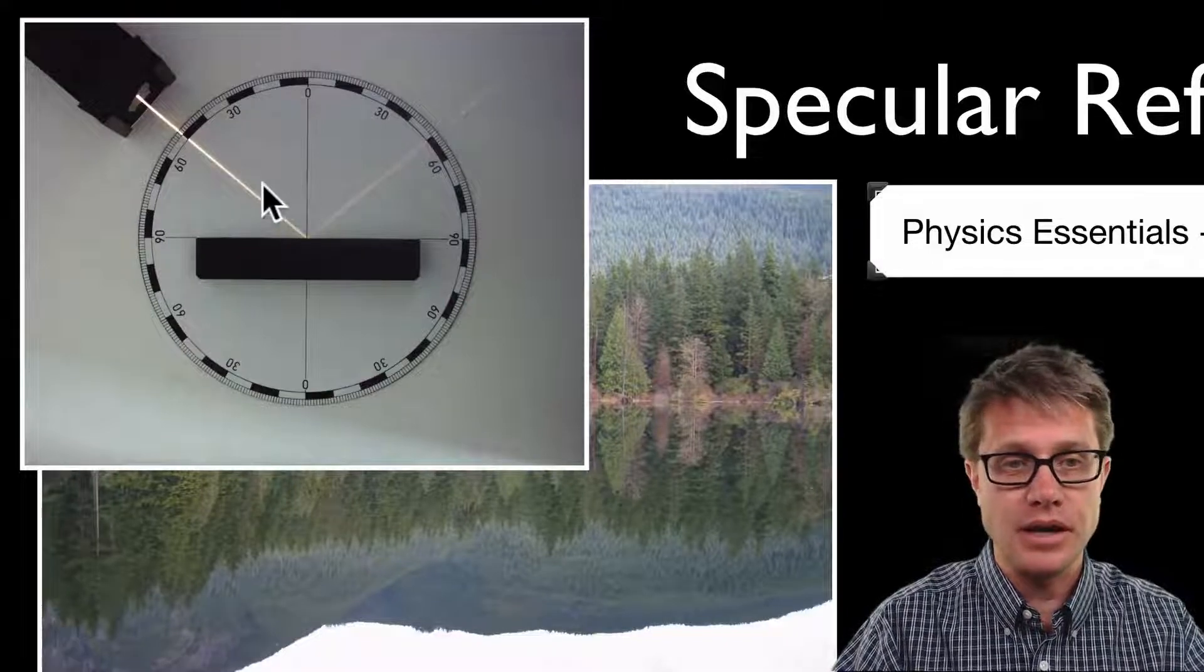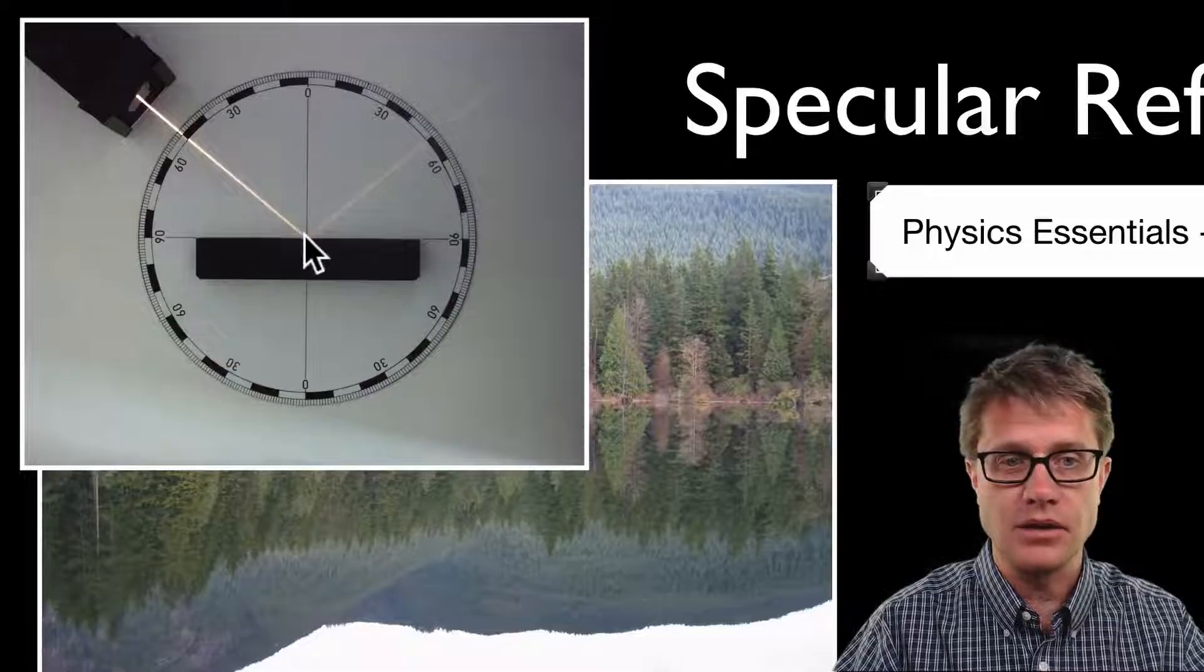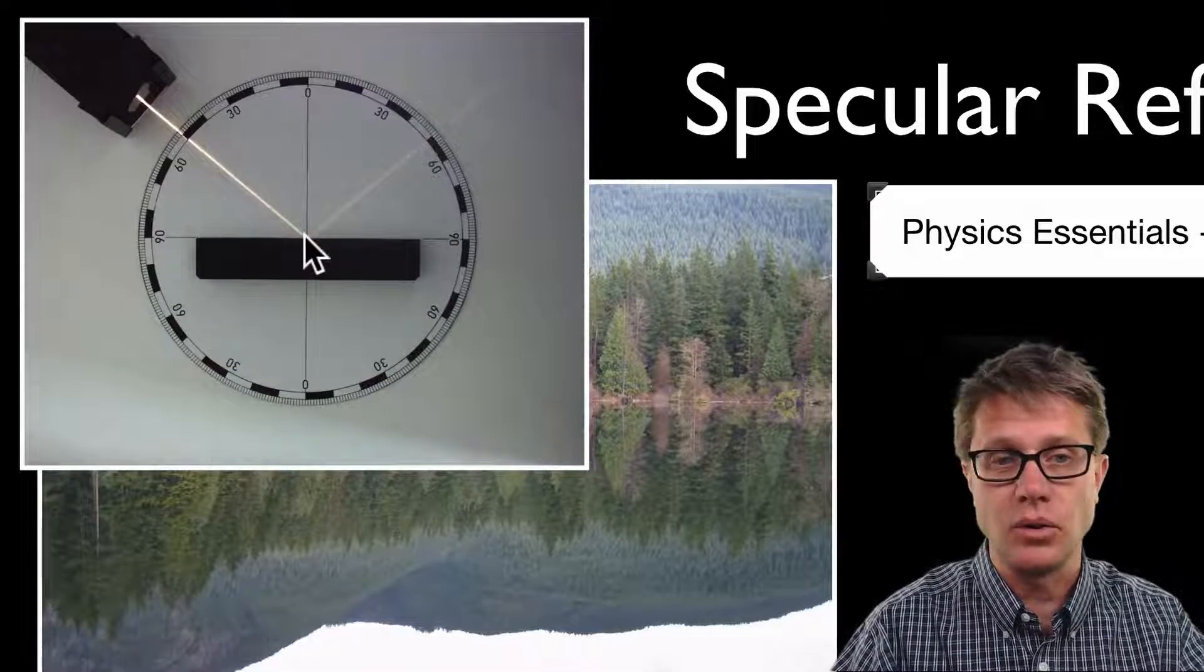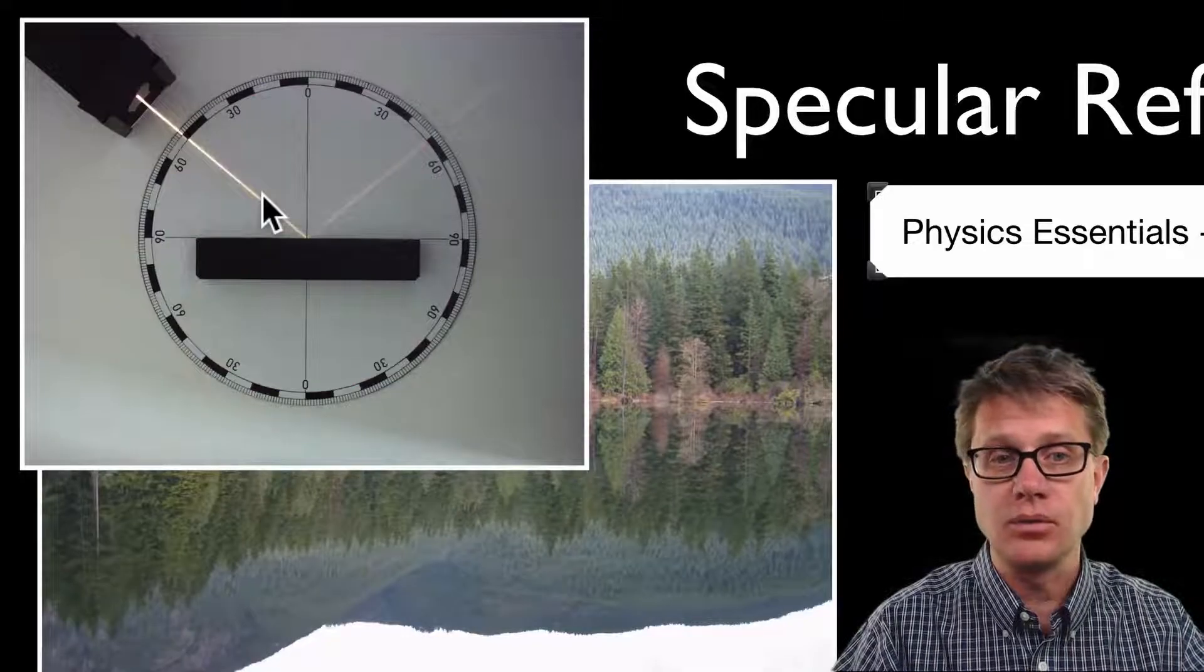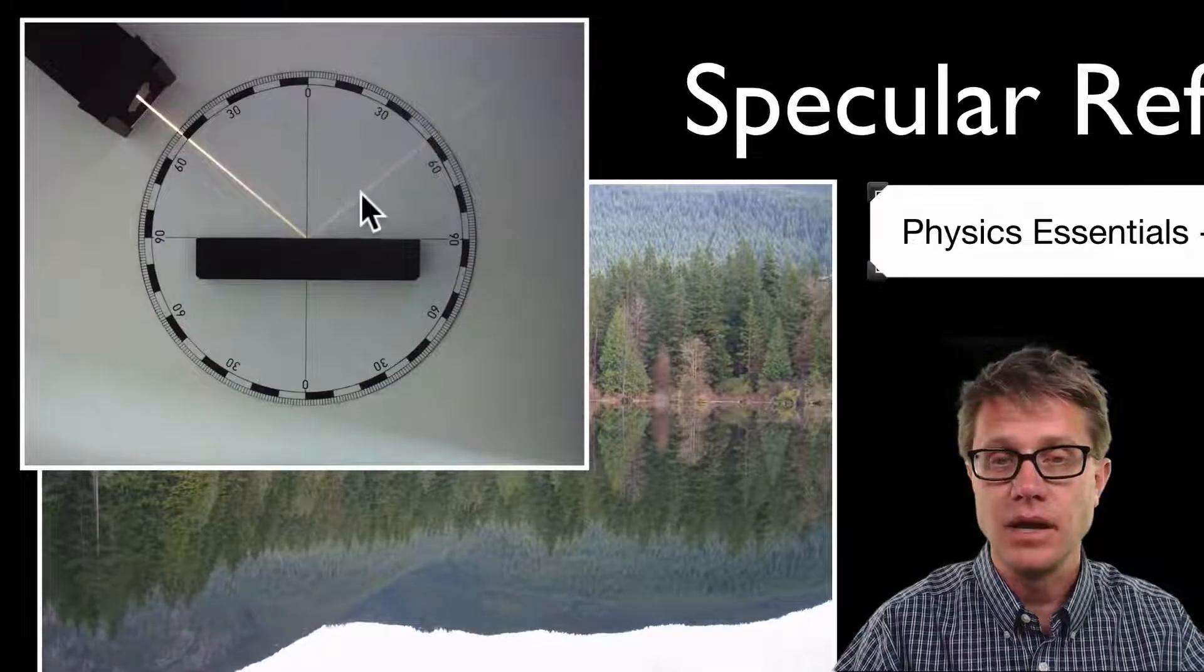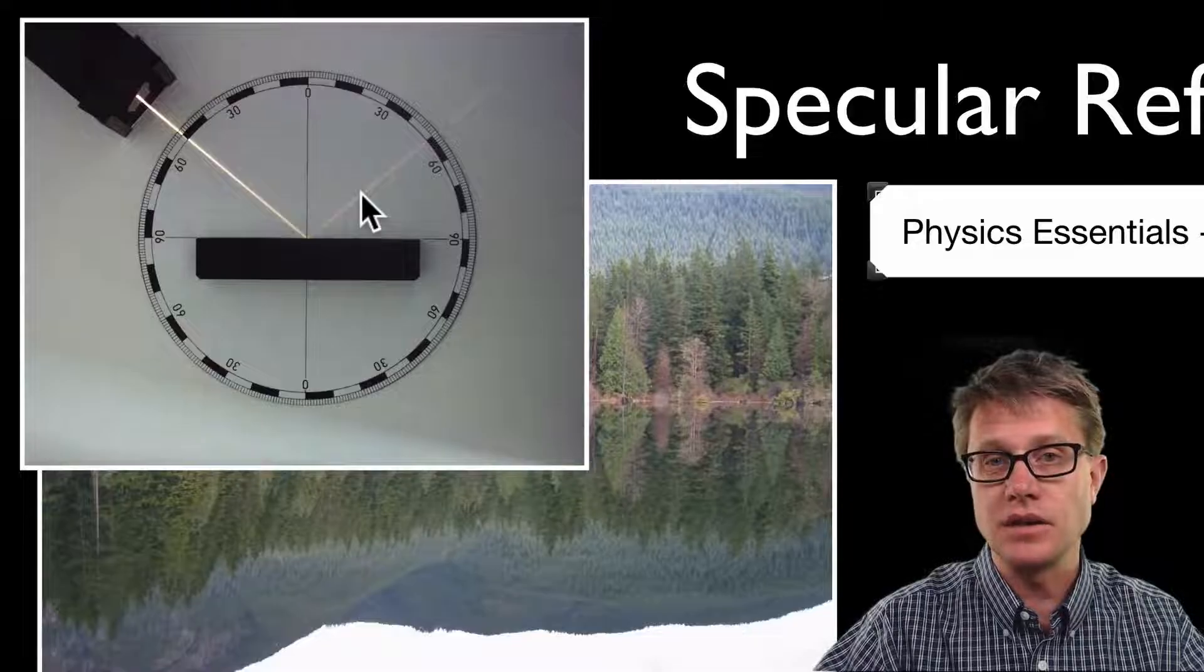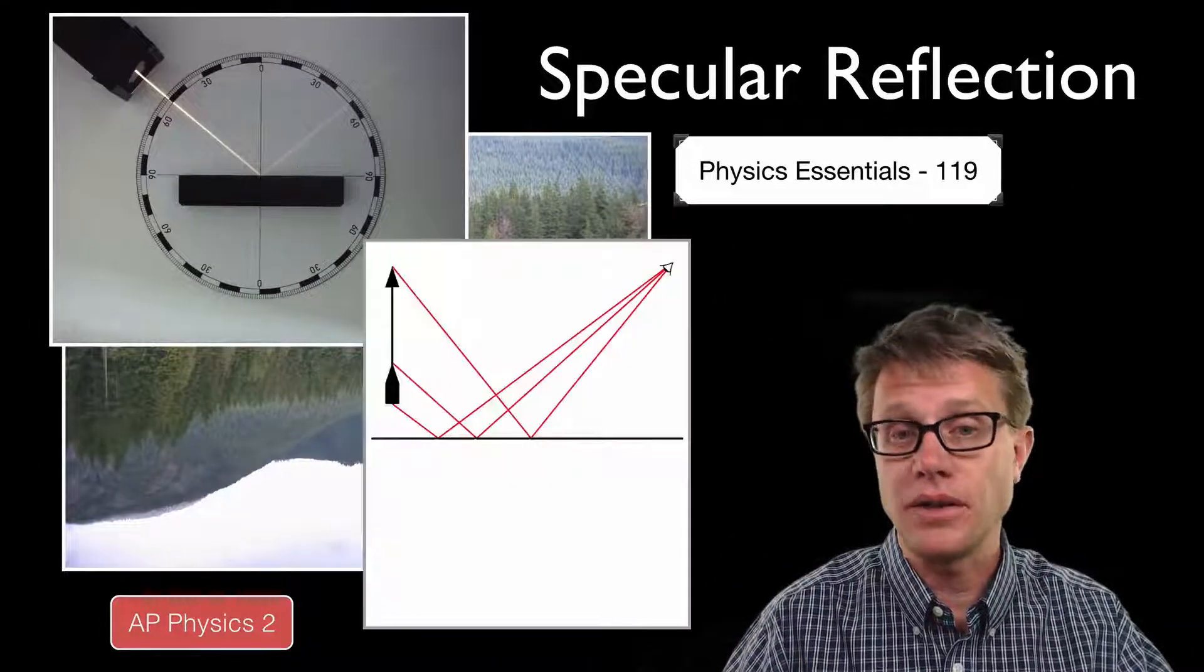And there is a rule that the angle of incidence, in other words if we draw a line right down here that represents zero, we call that the normal, then the angle between here and here, or angle of incidence, equals the angle of reflection. And as we change the angle of incidence we are going to get a changing angle of reflection.